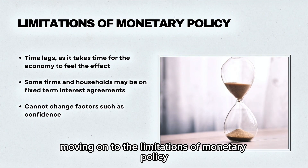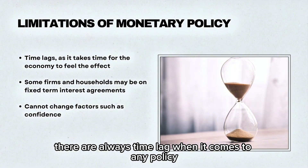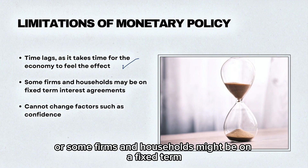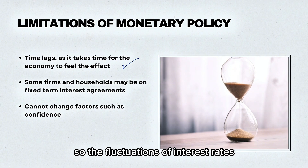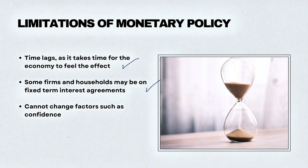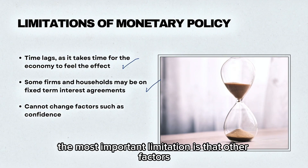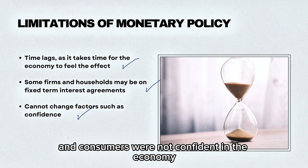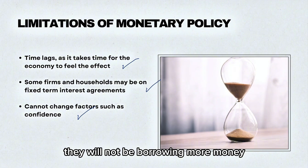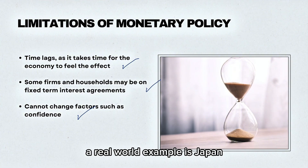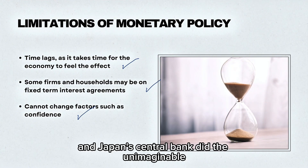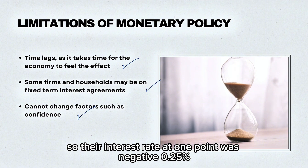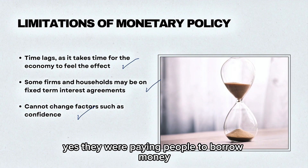Finally, moving on to the limitations of monetary policy. There are always time lags, as it takes time for the economy to feel the effects of any policy. Also, some firms and households might be on a fixed-term interest agreement for, say, 30 years, so fluctuations in interest rates will have no effect on them. Possibly the most important limitation is that consumer and business confidence is absolutely key. For instance, if the interest rate was at zero and consumers were not confident in the economy, they will not borrow more money just because it's cheap. A real-world example is Japan, where consumers have very low confidence. Japan's central bank made interest rates negative — at one point negative 0.25% — meaning they were effectively paying people to borrow money.